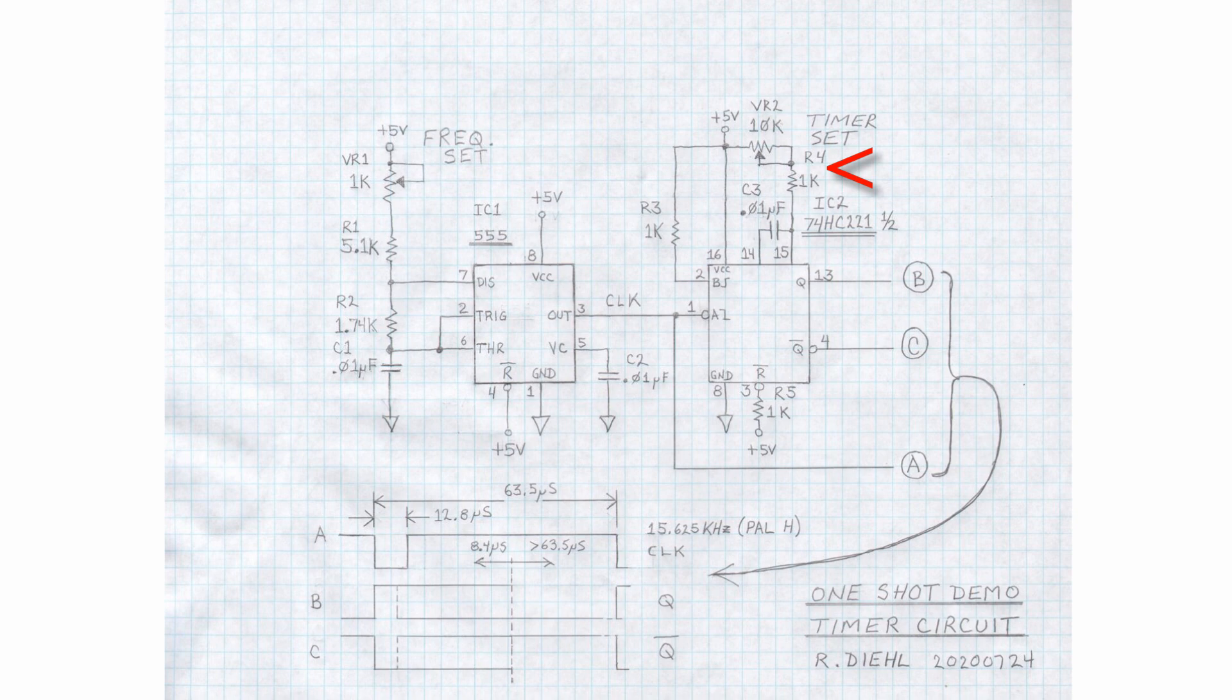All right, that is our test circuit. Now, looking at the traces again on the bottom of the diagram, trace B is the Q output. All right? And that's the one we will look at on the scope. So, looking at the diagram, you see the dotted line in the center with the arrow pointing in two directions. It says 8.4 microseconds one way and greater than 63.5 microseconds to the right. And that represents the adjustable range of VR2. Now let's look at that on the oscilloscope.